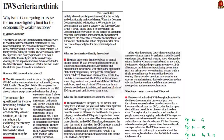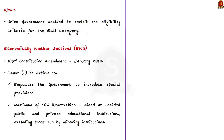Now let us take up this FAQ article. Recently, the union government decided to revisit the eligibility criteria for the economically weaker sections EWS category, and this article is written in that background. The concept of EWS and their 10% reservation was introduced through the 103rd Constitution Amendment Act, which was enforced in January 2019.